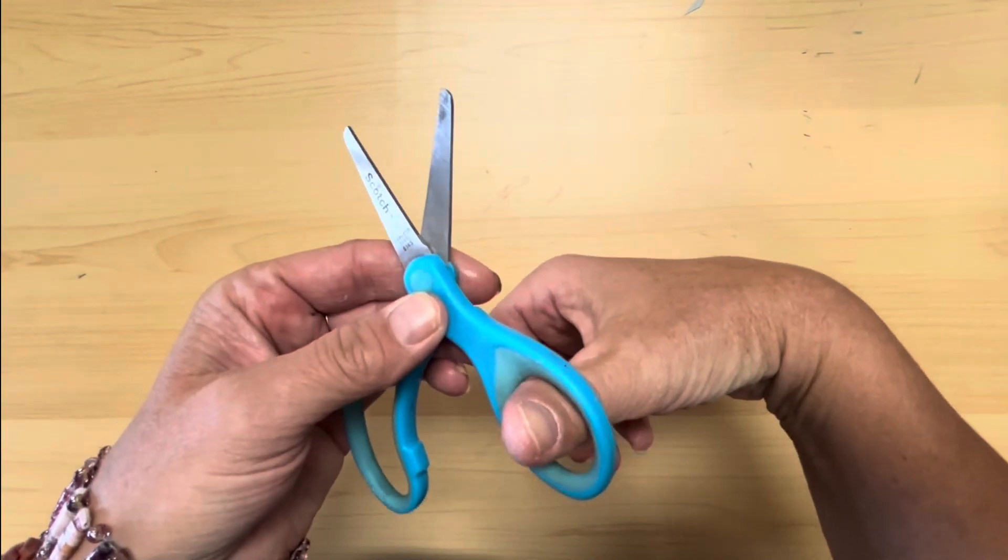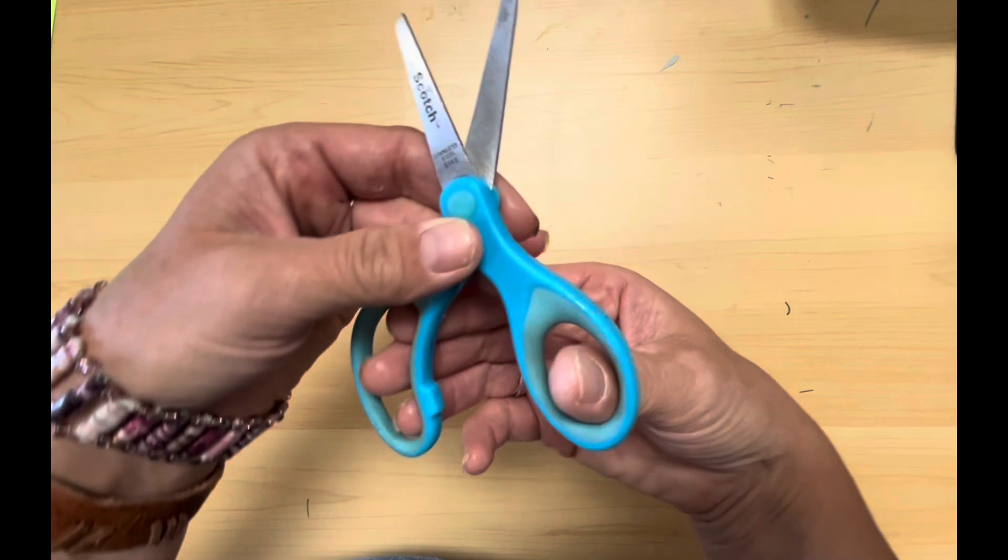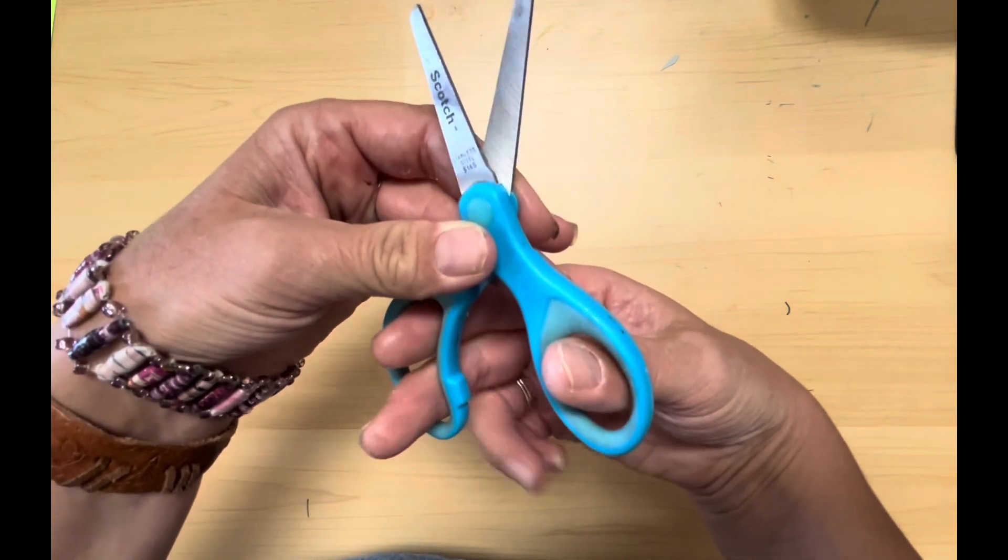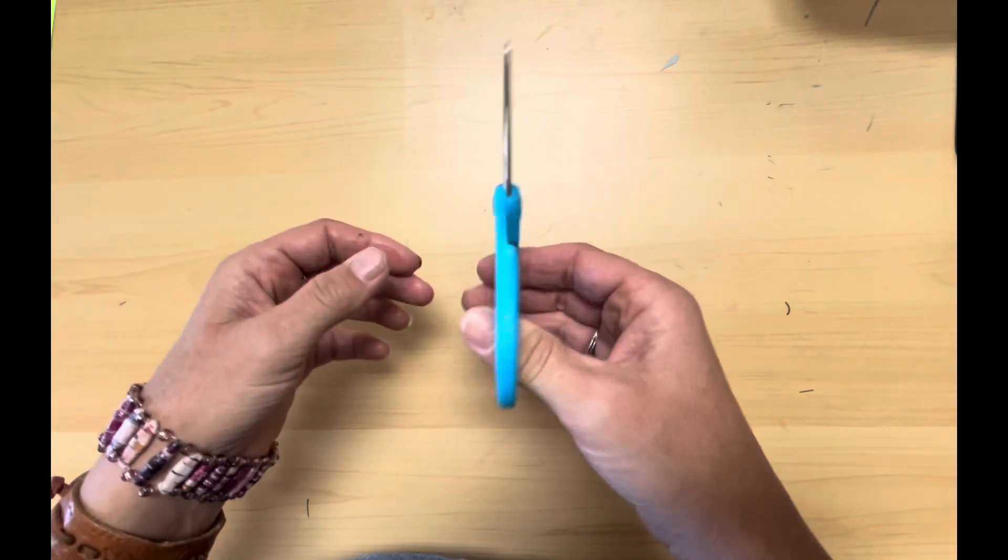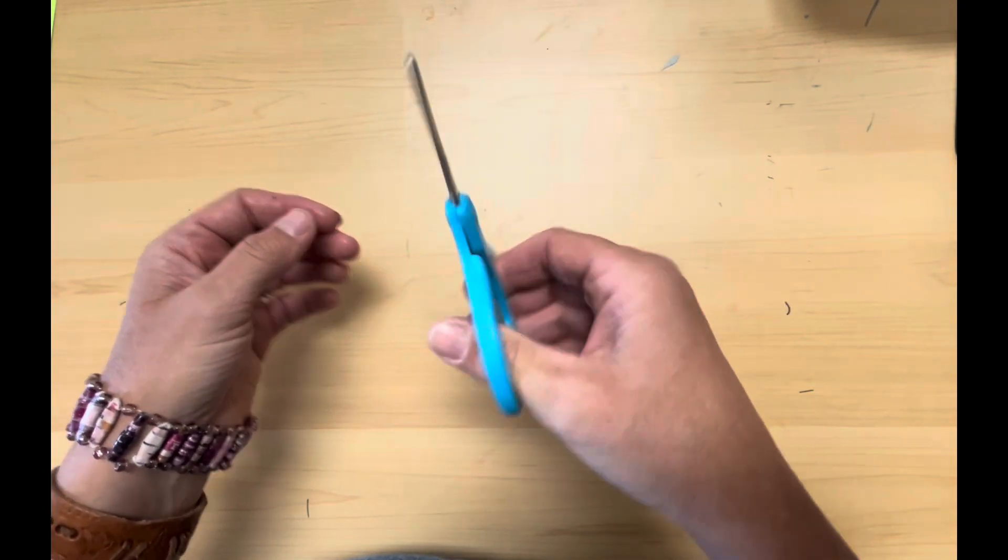Cutting paper. The first thing we have to do is make sure we're holding our scissors correctly. There's a place for your thumb and a place for your other fingers, either two or three. You put your thumb in the small hole and two or three fingers in the larger hole.